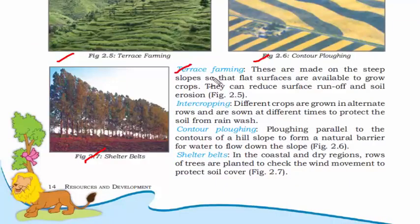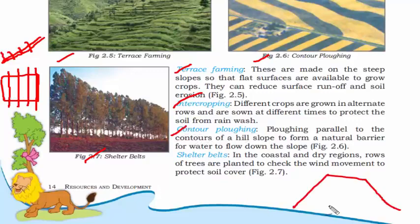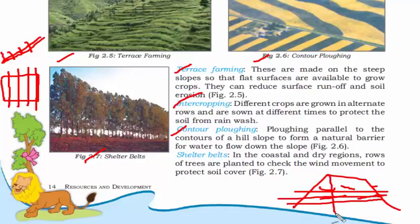The fourth method is terrace farming — on a slope, you make terrace-like steps so that soil does not slide down and water remains there. The fifth method is intercropping: growing two crops alternately on the same land, at separate times, to protect the soil from rainwash. The sixth method is contour plowing: on elevated land, you plow parallel to the contour so crops hold the soil with their roots and prevent soil and water from running downhill.